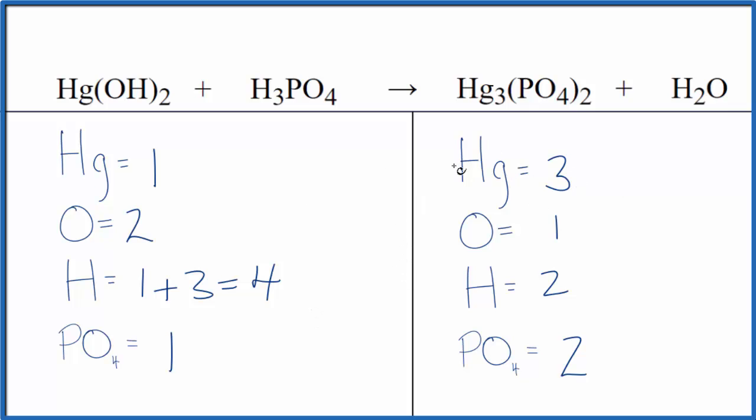Why don't we balance the mercury first. We'll put a three here, one times three gives us three, but we do need to update the hydrogens and oxygens. We have three times one times two, so six oxygens here. Remember the phosphate, we leave that alone. Then we have three times one times two, six hydrogens, plus these three hydrogens here, so nine hydrogen atoms.